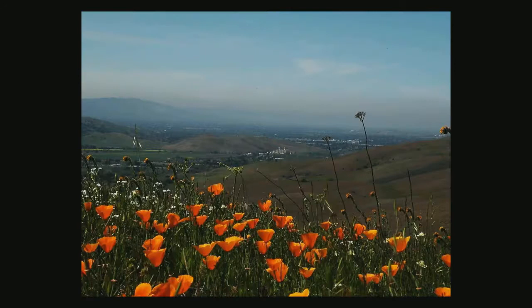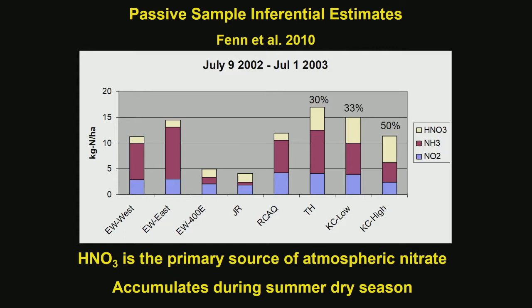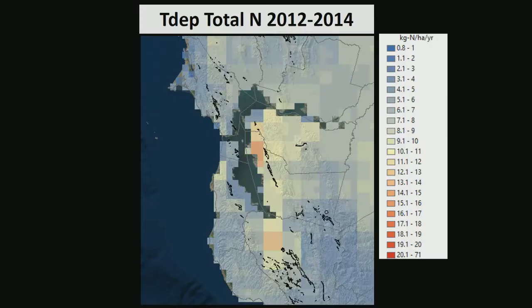Let's look at the deposition environment here — the brown cloud. We did some passive sampler measurements looking at nitric acid, ammonia, and nitrogen dioxide. About 30 to 50 percent in these South Bay sites is coming in the form of nitric acid vapor — that's the source of the atmospheric nitrate — and it accumulates over the course of the summer dry season. The Tdep product from the EPA is fantastic for looking at composition and trends, though it's spatially coarse.